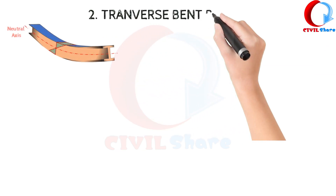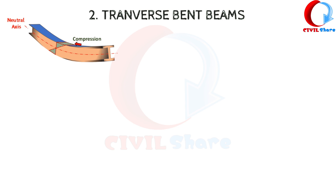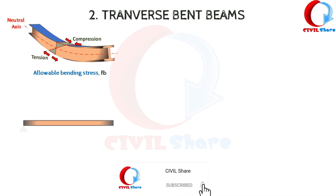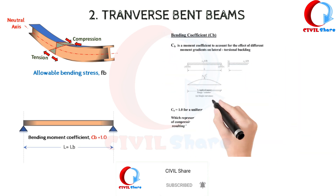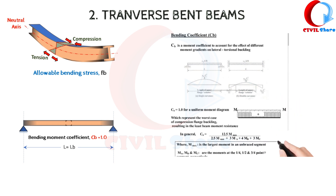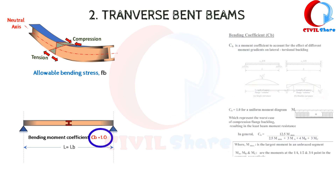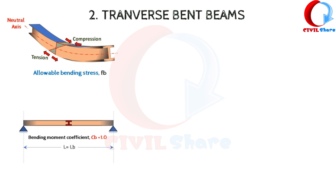Transverse bent beams: In computing the allowable bending stress Fb, the unbraced length shall be taken as the span of the beam and the AISC factor Cb shall be used to account for end fixity. A value of 1.0 is a very conservative and safe assumption. In no case shall the assumption of lateral support from piping be used in computing Fb.